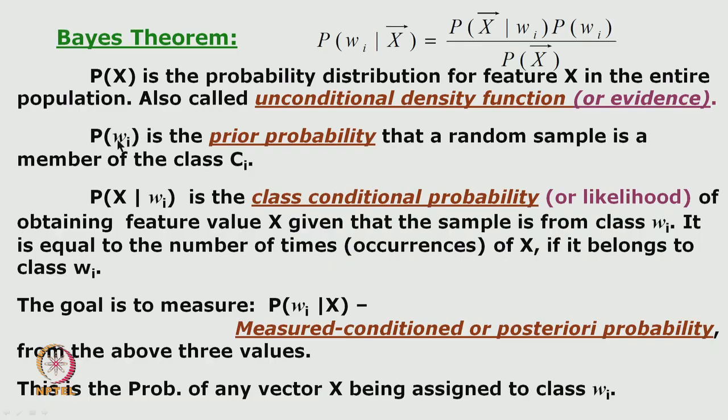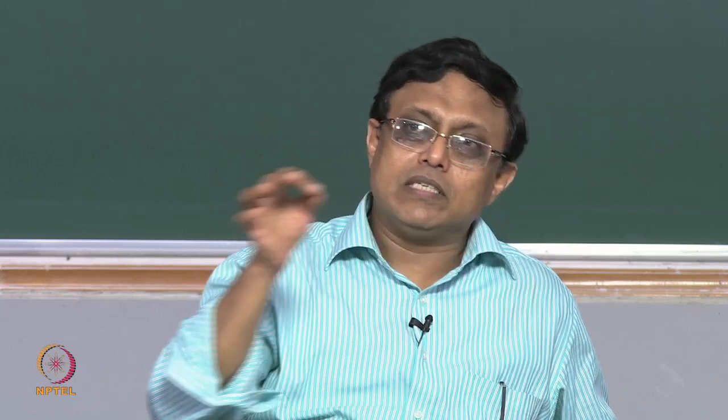p(ωi) or wi indicates the prior probability that a random sample is a member of class ci — this is called the class prior, sitting in the numerator of the Bayes expression. For a two-class problem discriminating between apples and oranges: given a bag of 10 fruits, 6 apples and 4 oranges, p(w1) for apples is 6/10 = 0.6 and p(w2) for oranges is 0.4. That is an example of a class prior.